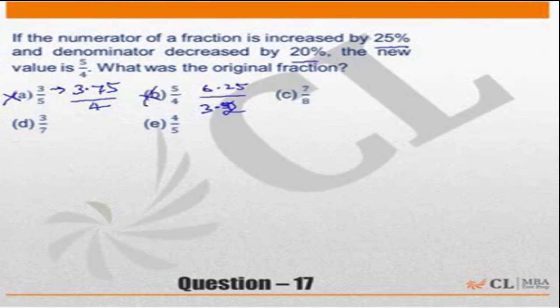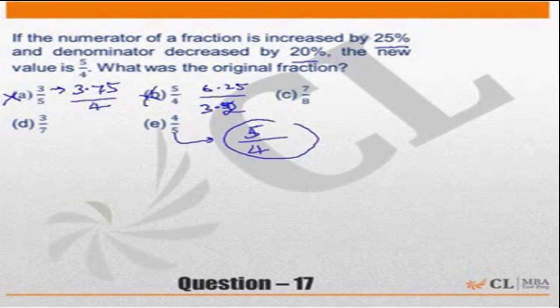This choice, numerator increased by 25% would become 4 plus 1, that's 5. Denominator decreased by 20% becomes 4. This matches with the fraction given hence this is the correct answer. So for this question either you could have done it straight away or you could have started working with the choices.